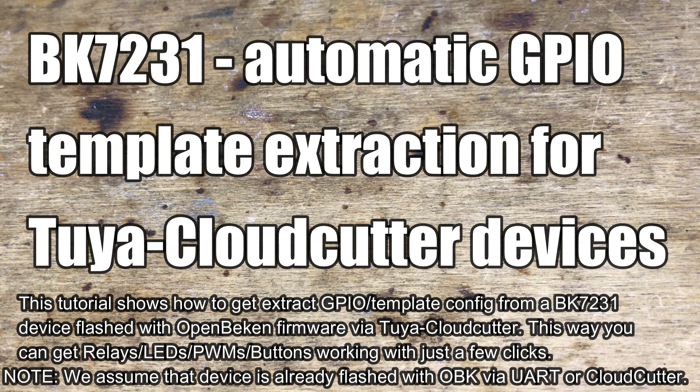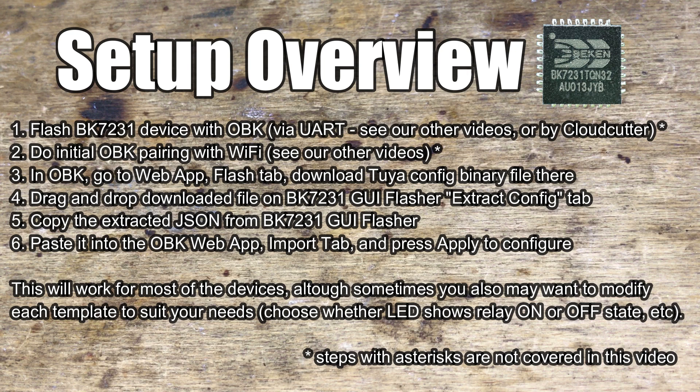Here we will show you how to extract Tuya GPIO configuration from a beacon device after flashing it. This method works even after flashing via Wi-Fi by Tuya Cloud Cutter. Tuya configuration extraction allows us to automatically configure GPIO of the device without any guessing — you immediately get information about which GPIO is used for relay, which for button, and so on. This works even for power metering sockets with BL chips and LED lamps with L2C controllers. Most device types are covered.